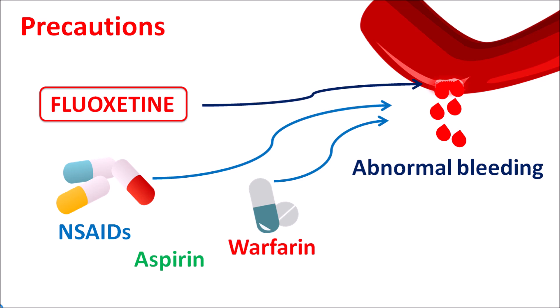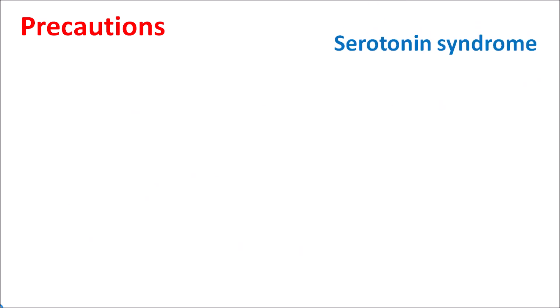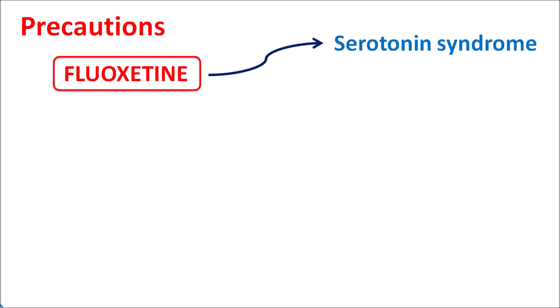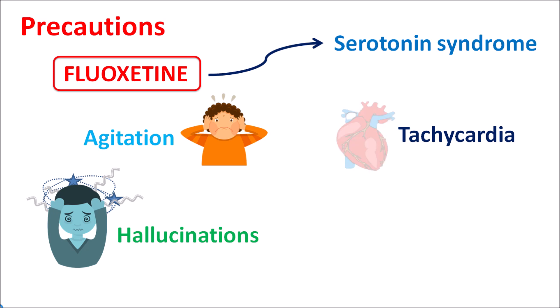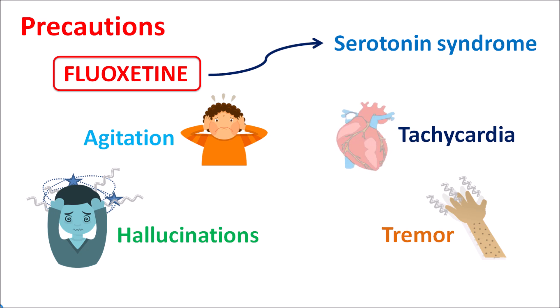Another precaution is serotonin syndrome, commonly observed with many antidepressants affecting serotonin levels. Fluoxetine can increase the risk of serotonin syndrome, producing symptoms such as increased anxiety and agitation, tachycardia, psychotic symptoms such as hallucinations, and tremor. Since many CNS drugs can induce serotonin syndrome — such as MAO inhibitors, SSRIs, SNRIs, and TCAs — all these should be carefully combined with fluoxetine, as such combinations may further increase the serotonin syndrome.